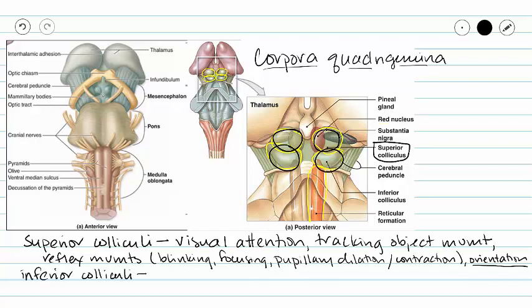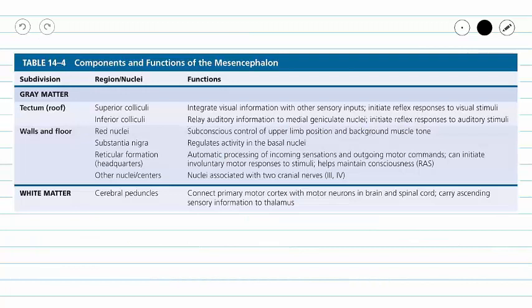The inferior colliculi have similar functions, but instead of reflex movements of the head to visual stimuli, they function in reflex movements to auditory stimuli. If you hear something to the side or behind you, you will turn to look. If something crashes to the floor, you may turn your entire body toward the sound. A table summarizing the functions of the mesencephalon is provided here.